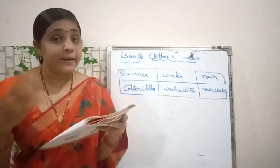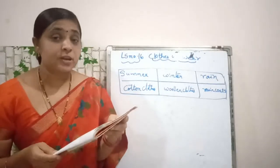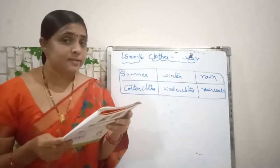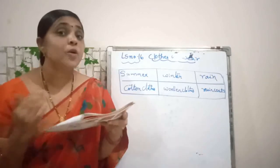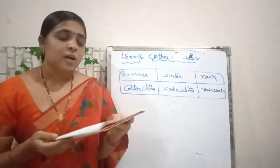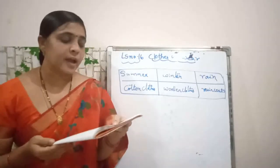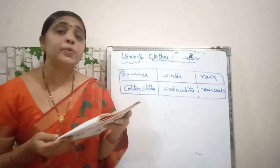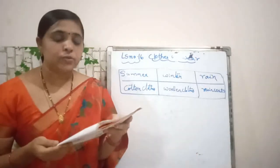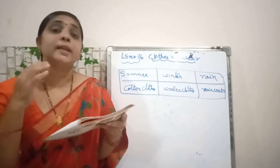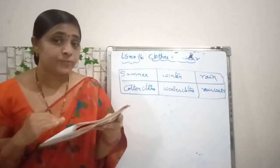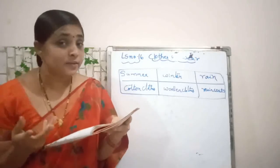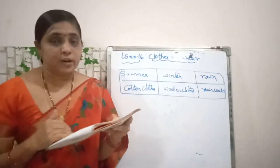During the rainy season we need waterproof — W-A-T-E-R-P-R-O-O-F — clothes. We wear raincoats. They are made from plastic — P-L-A-S-T-I-C — or rubber — R-U-B-B-E-R. They do not allow water to get inside — that is what is called waterproof. They protect us from getting wet in the rain.